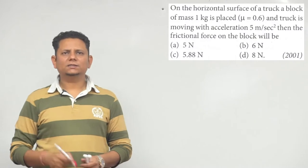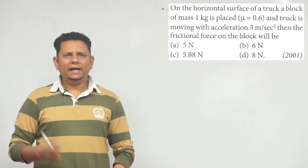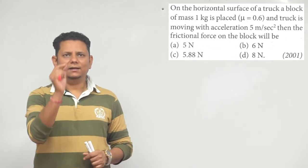Next question, 2001 question says: On a horizontal surface of a truck, a block of mass 1 kg is placed, μ is given as 0.6, and the truck is moving with acceleration of 5 meter per second square, then the frictional force on the block will be.